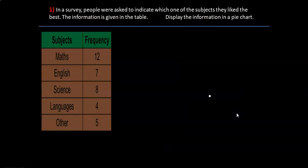Now let's learn how to draw a pie chart. Look at the question. In a survey, people were asked to indicate which one of the subjects they liked the best. The information is given in the table. If you look at the table, 12 people liked maths, 7 liked English, 8 science, 4 languages and 5 people liked other subjects. So first thing we need to do is find the total number of people. How many people were surveyed by adding all this? 12 plus 7 plus 8 plus 4 plus 5 that gives you 36.